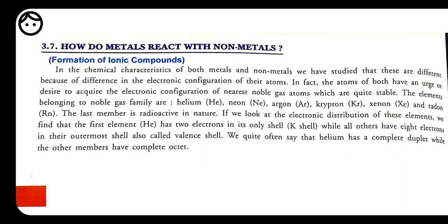First we will discuss about metals and non-metals. Metals are called electropositive elements. Most elements present in our periodic table — like lithium, sodium, potassium, rubidium — are metals. When we see the electronic configuration of metals, it is found that all metals have a few electrons on their outermost shell. For sodium, atomic number is 11, and the electronic configuration is 2, 8, 1.